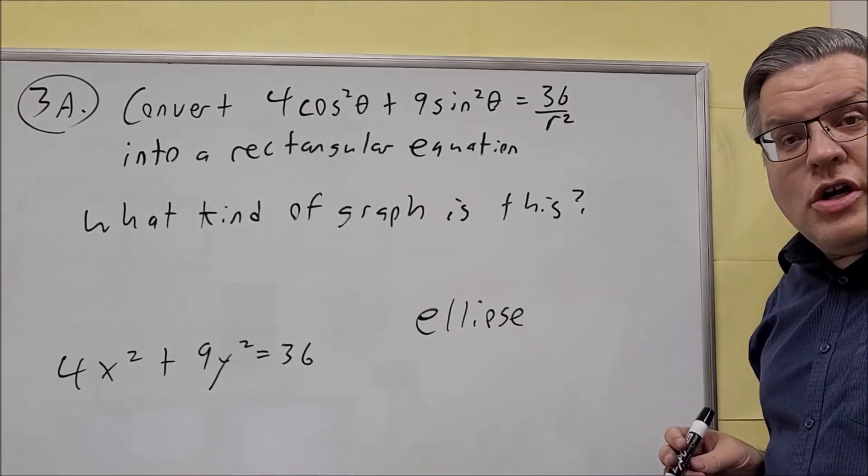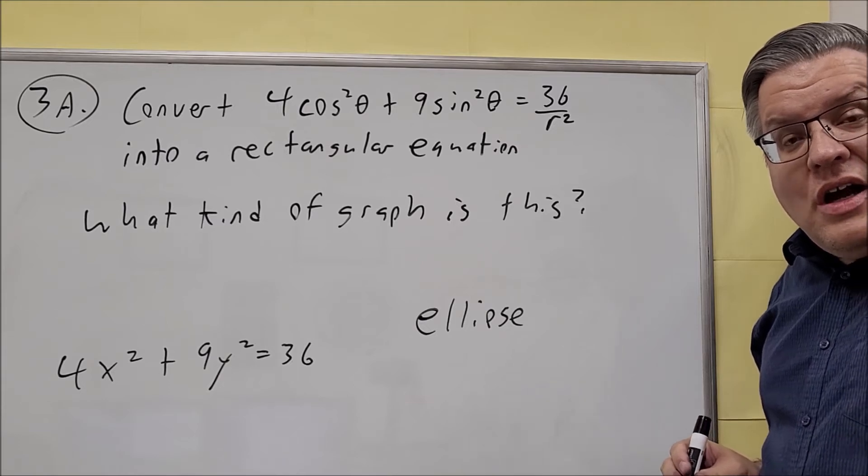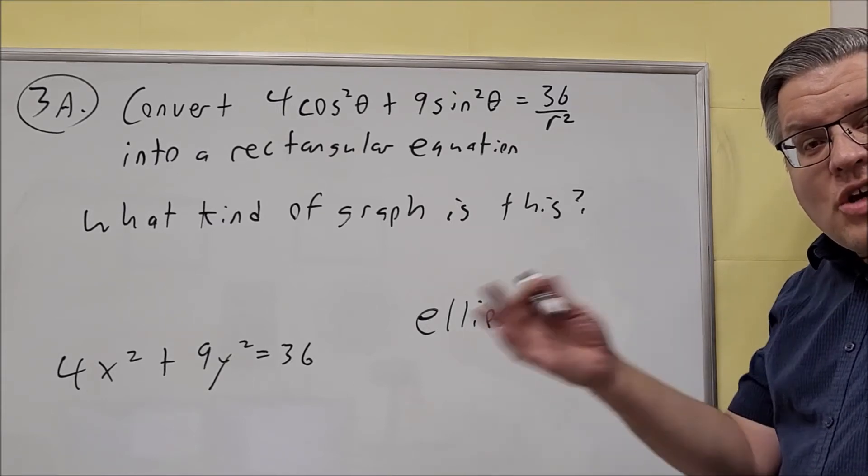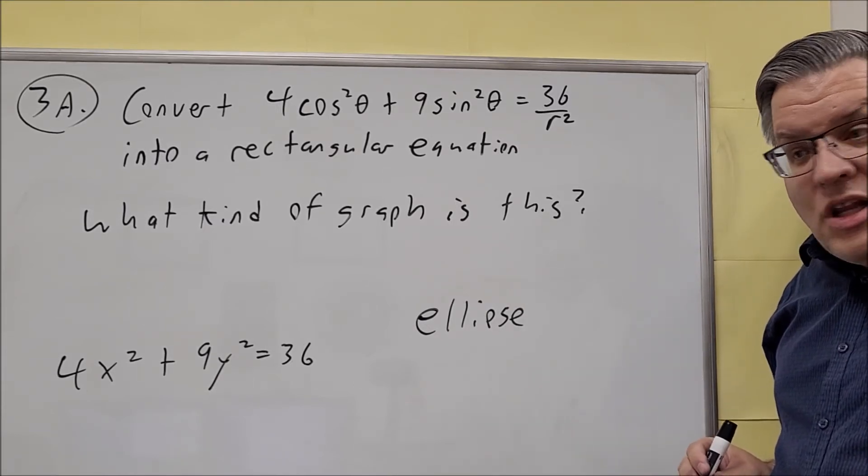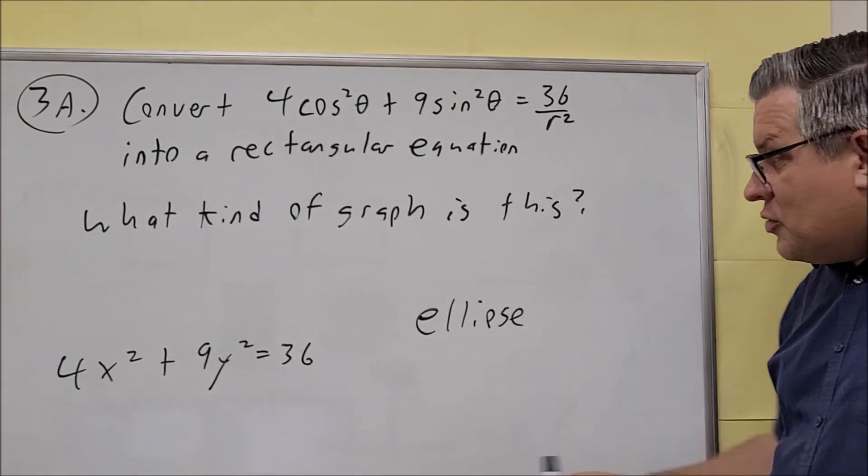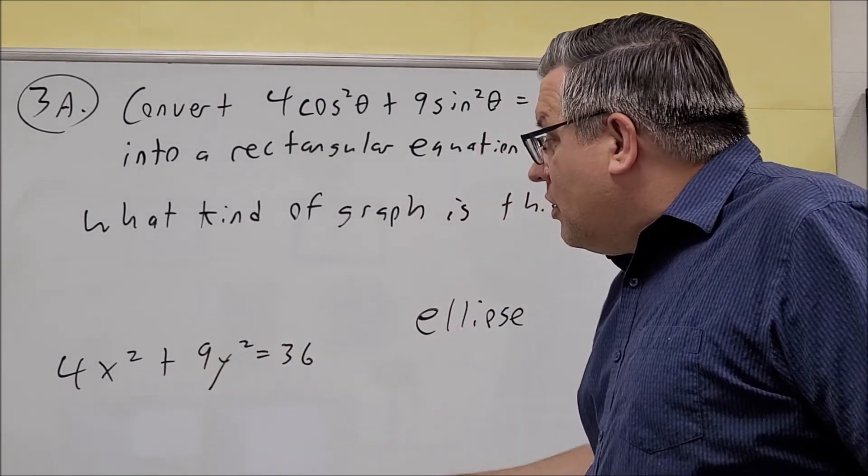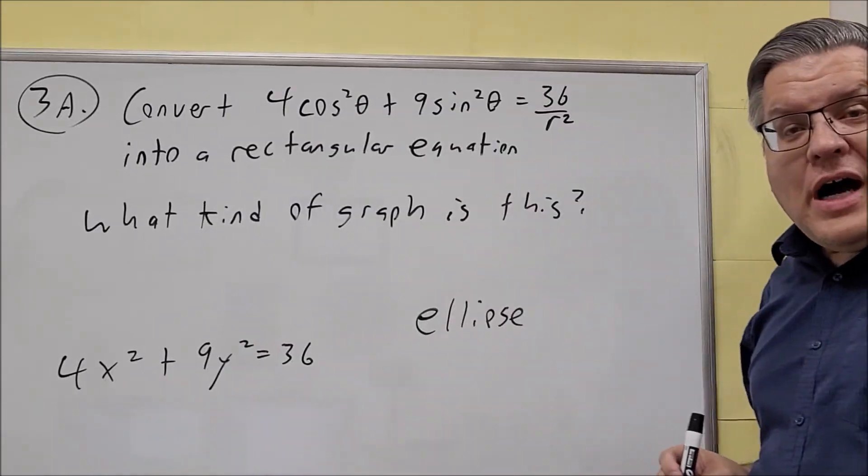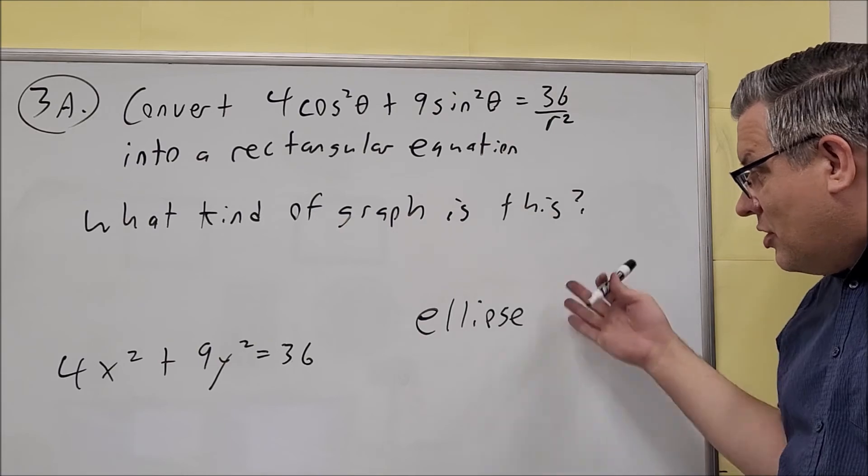All right, so you want to take a look at the rules that was covered in the section with hyperbolas that we did and that will help you identify what it is. But again, it's because you have x squared, y squared, the 4 and the 9 are both positive and they're different, it's an ellipse.